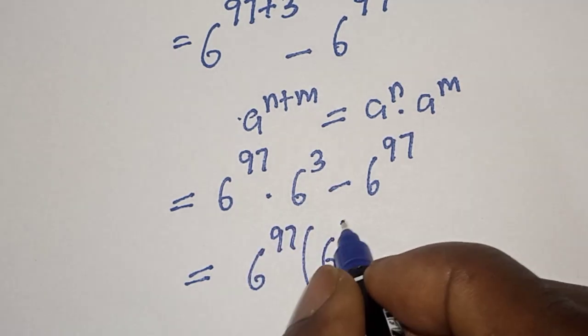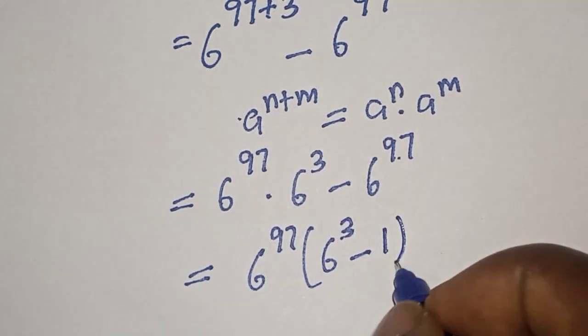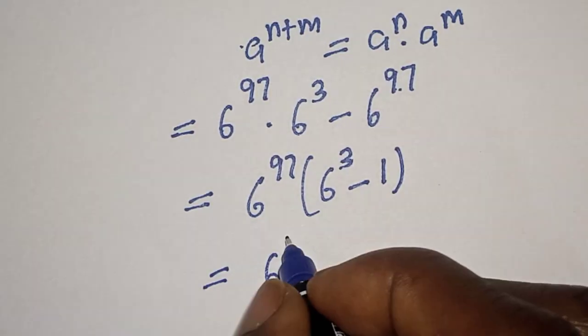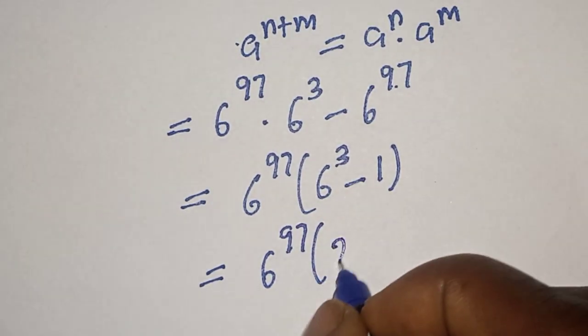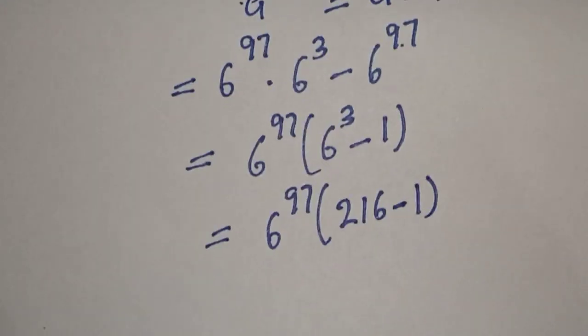minus this divided by this one. This is equal to 6 to the power of 97 in brackets. 6 to the power of 3 is 216 minus 1, and